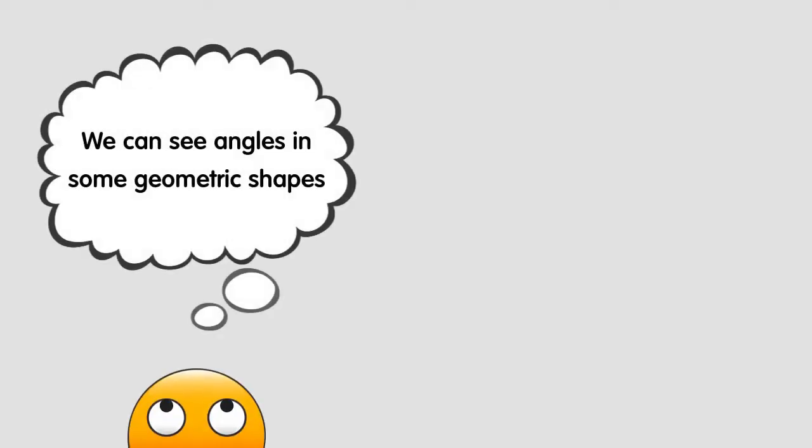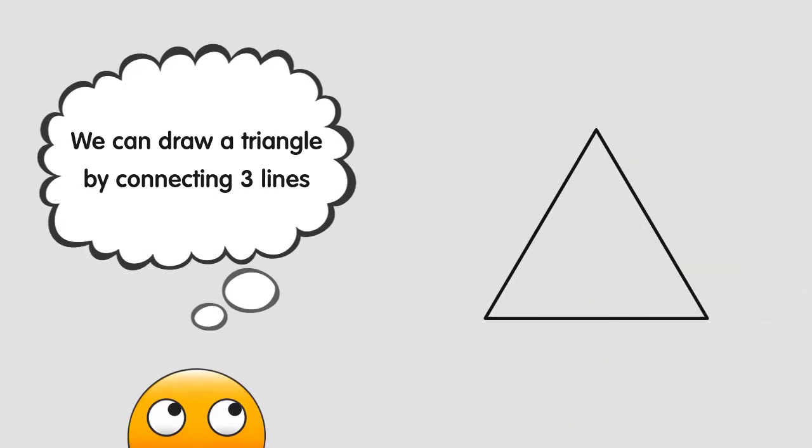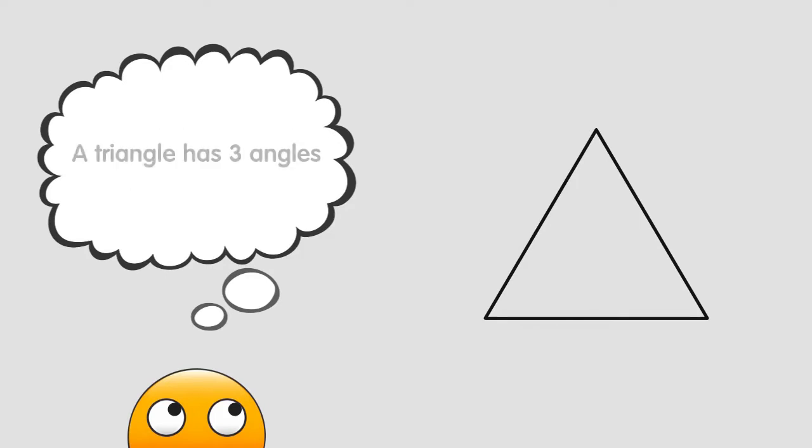We can see angles in some geometric shapes. For example, we can draw a triangle by connecting three lines. Do you remember that we said that an angle is formed by two lines? Well, in a triangle, we don't have one angle but three angles. One, two, and three.